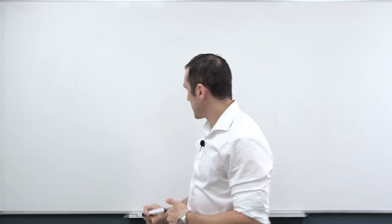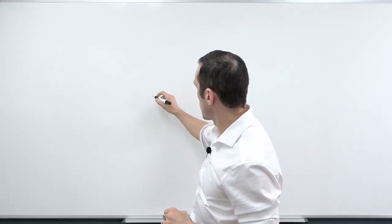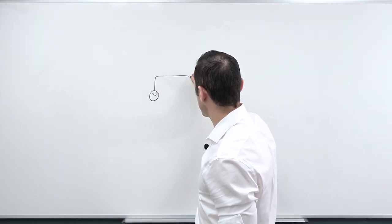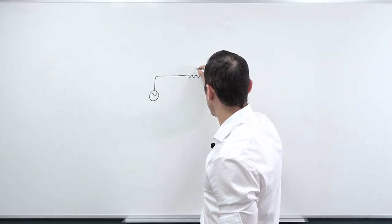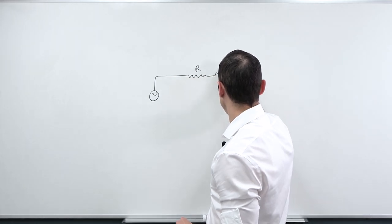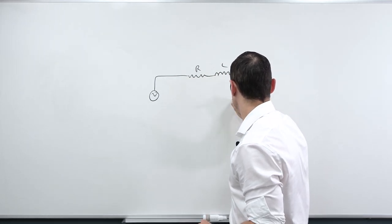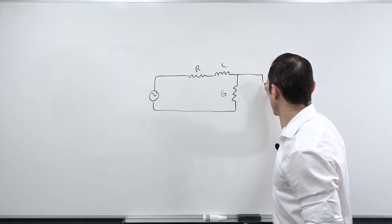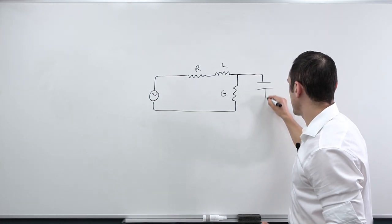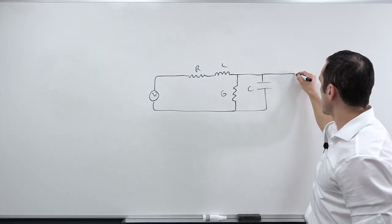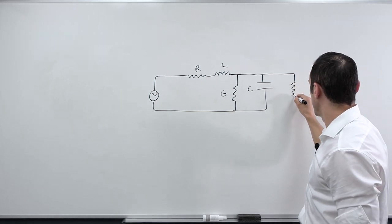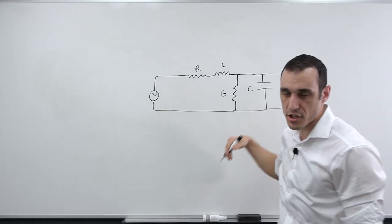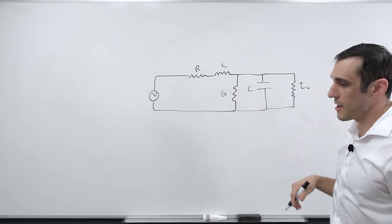To get started with looking at input impedance, I'm just going to redraw the typical circuit model used to represent a transmission line. So here, let's consider an AC source, and then I've got my R and my L, and then I've got my G which represents my dielectric losses, and then I've also got my C for capacitance in my transmission line. And then down here at the other end we have a load impedance — I've drawn it as a resistor.